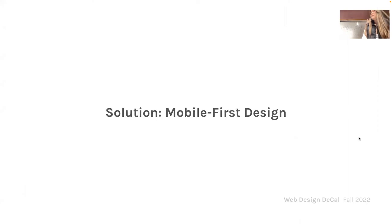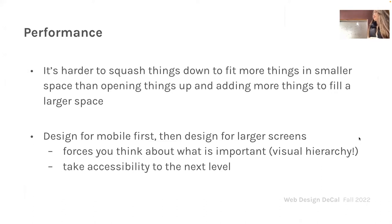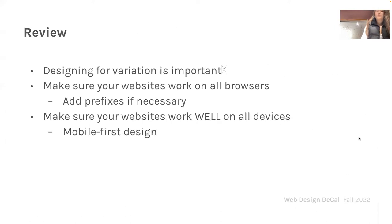The solution is mobile-first design. It's harder to squash things down than to open things up and fill a larger space. The rule of thumb is to design for mobile first and then design for larger screens. This forces you to think about what's most important — your visual hierarchy — and takes accessibility to the next level. Keep this in mind for your final projects: go small first, then widen it up.